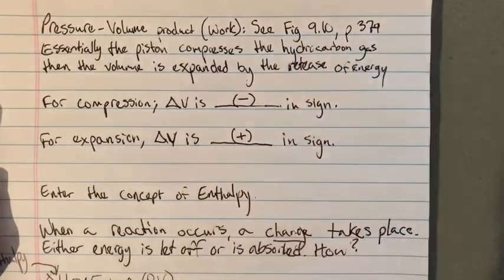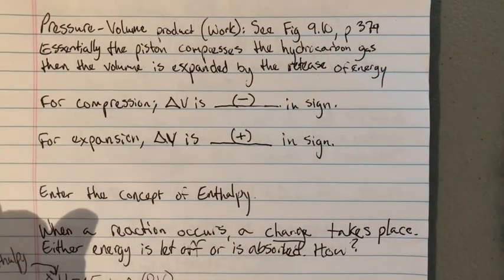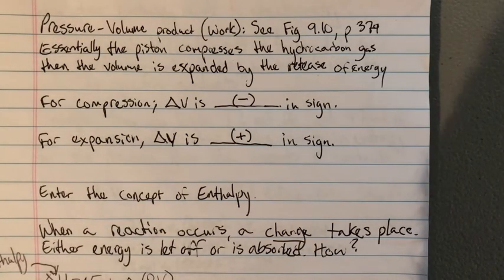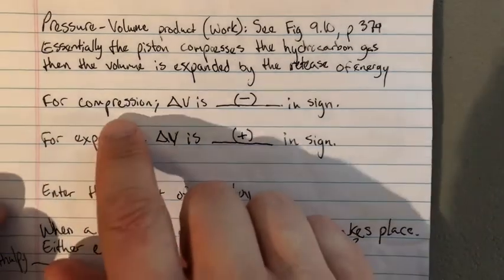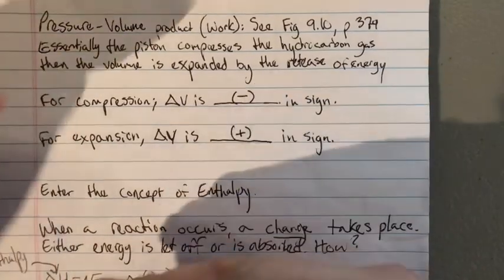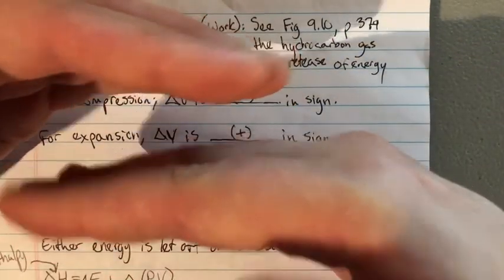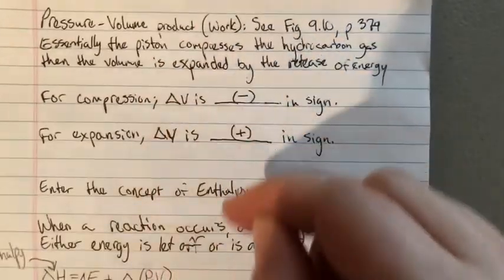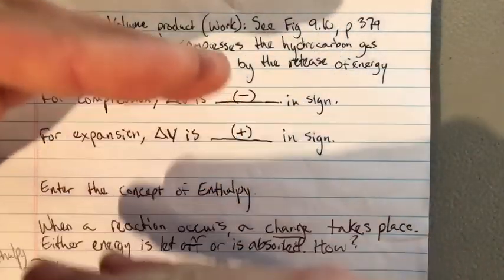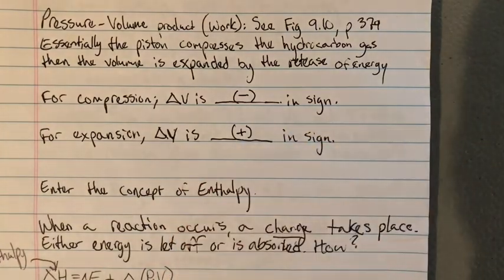For pressure-volume work — see figure 9.10 on page 379 — a piston compresses a hydrocarbon gas and then the volume is expanded by the release of energy, like a bang. For compression, delta V is negative — going from full volume to half volume, final minus initial. For expansion, going from half volume to full volume, delta V is positive.